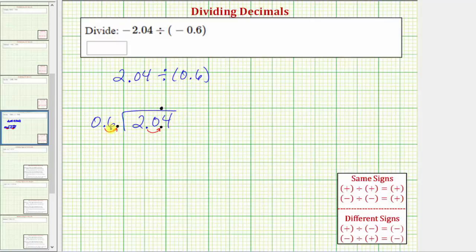If we write this quotient as a fraction, we would have 2.04 over 0.6. We also know we can create equivalent fractions by multiplying the numerator and denominator by the same value.